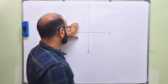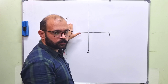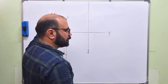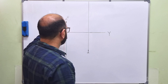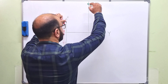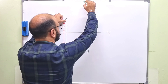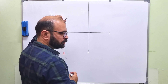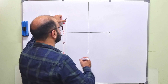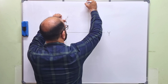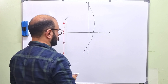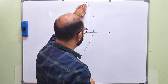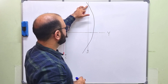The distance between the vertical projections of C and D — that is, between C' and D' — is given as 60mm. So we open the compass equal to 60mm, take C' as the centre, and draw an arc. This arc intersects the projection line of D at two points — one above and one below. These give two possible positions for the front view of D.